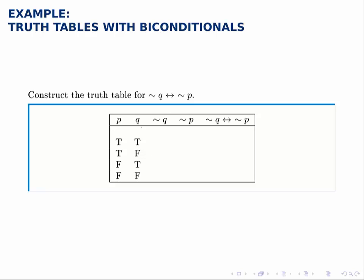For not Q we just look at Q and replace every true with a false, every false with a true. Same thing for not P. We'll have false, false, true, true.